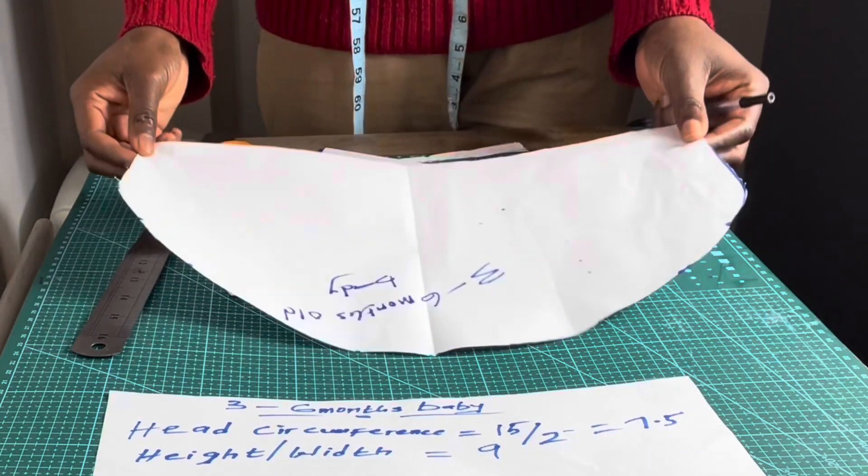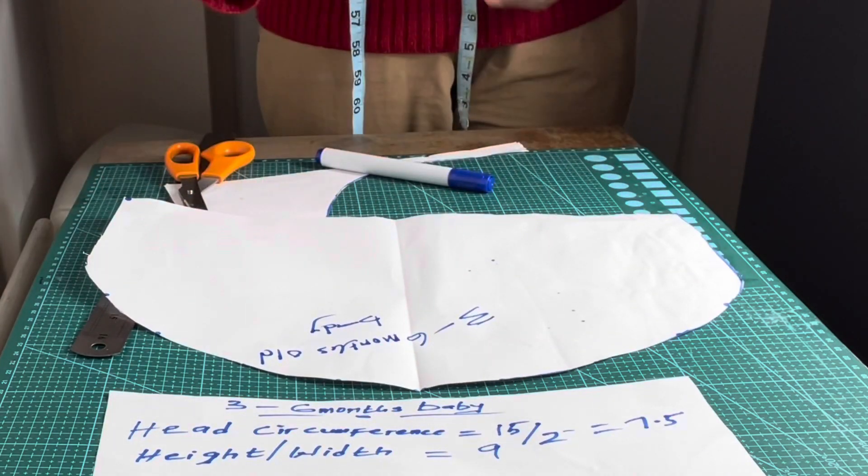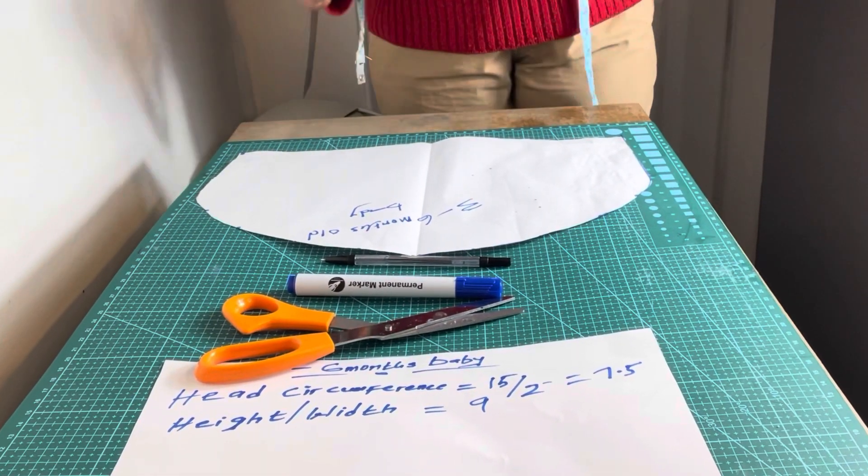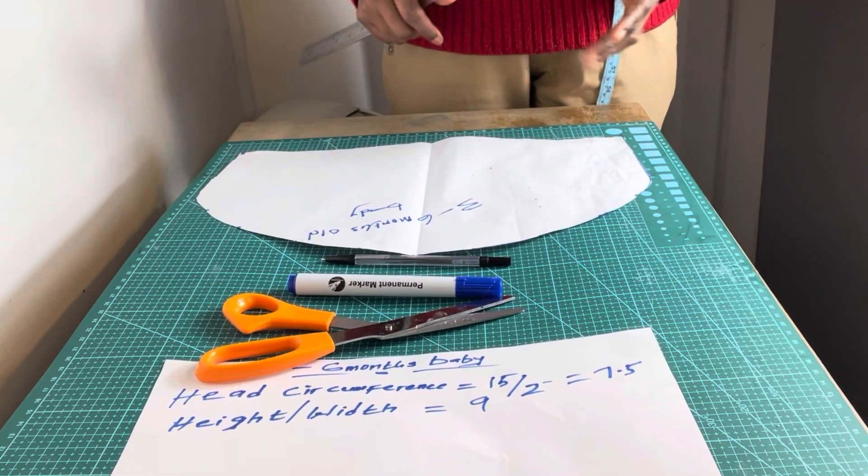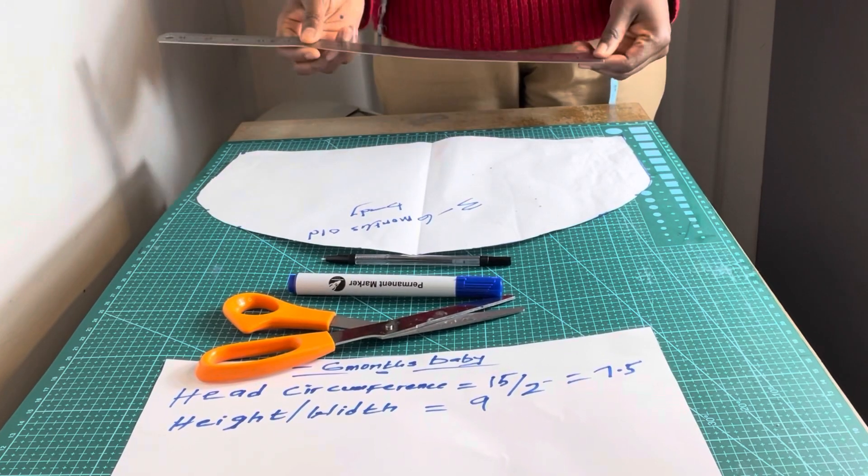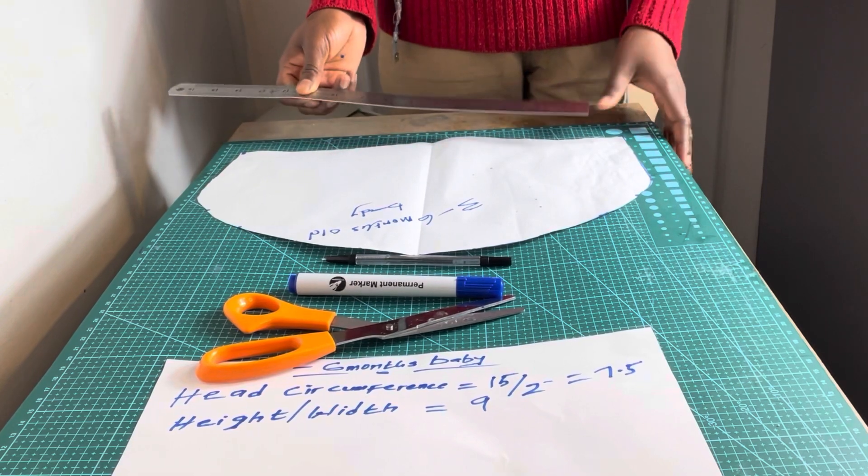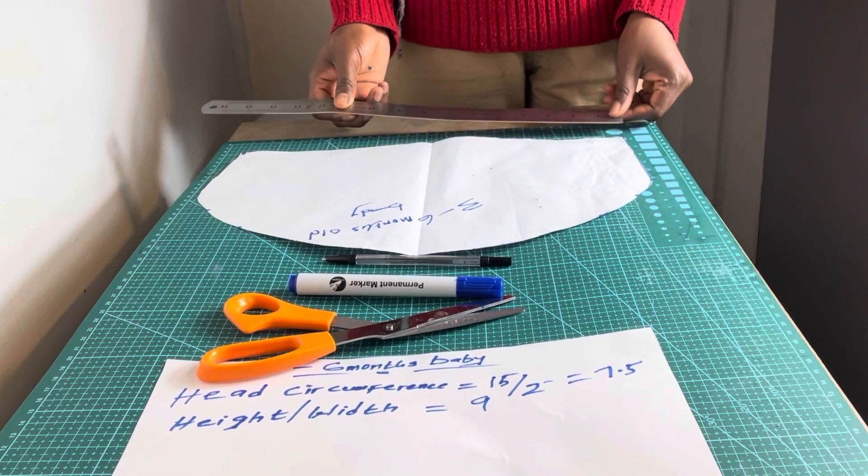Now all you need to do is place your pattern on your fabric, then you cut it out and start working. When you are done cutting out your pattern, you bring out your ruler or your measuring tape to check for a final check to see if the pattern is correct, because sometimes it might need a little bit of adjusting.